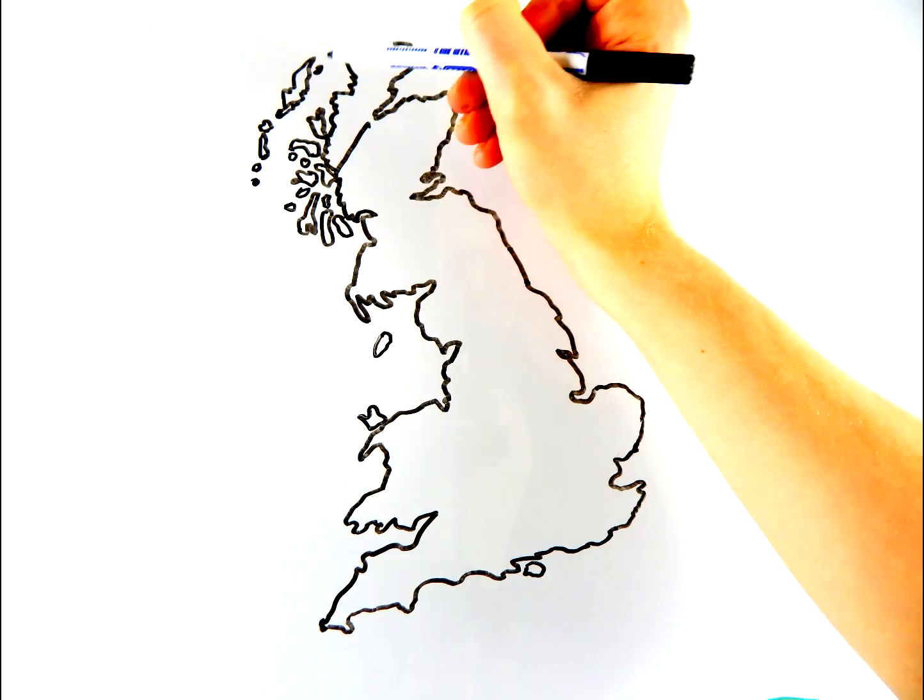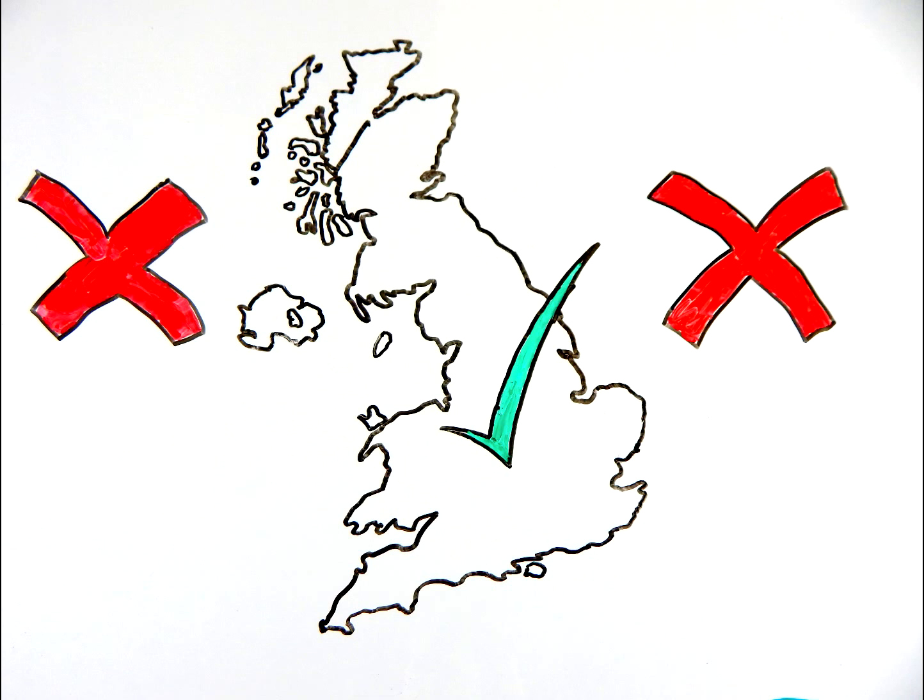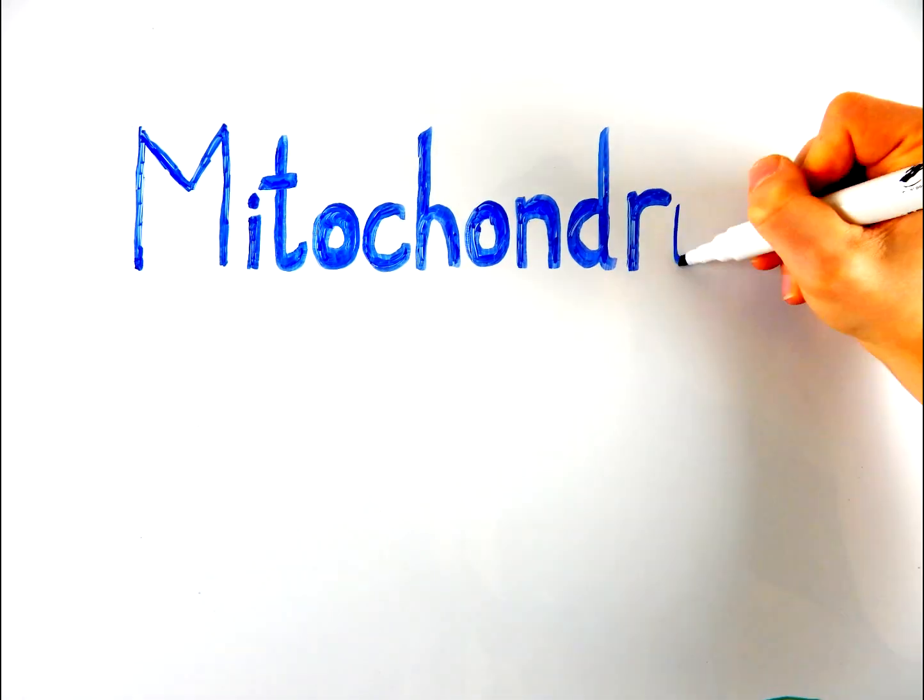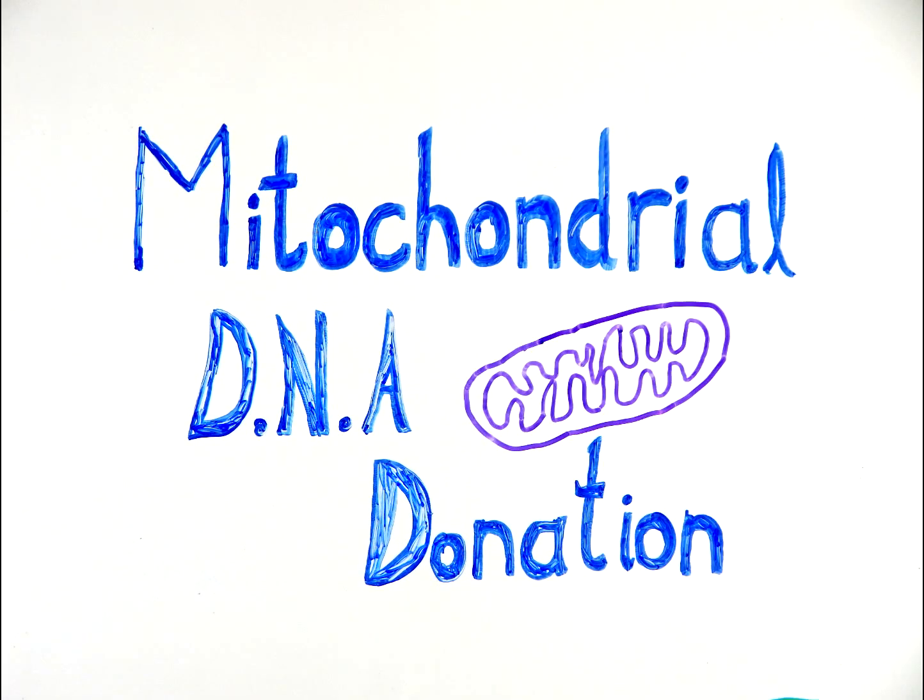In February 2015, the UK became the first country in the world to legalise a new, controversial medical procedure that as of March 2016 has still yet to be implemented in any other country. The procedure in question was the transfer of mitochondrial DNA between patients in an effort to prevent mitochondrial disease.